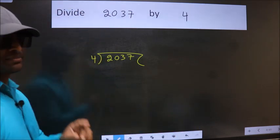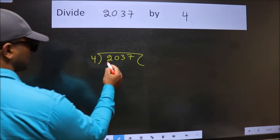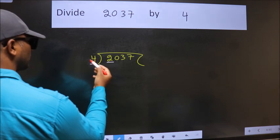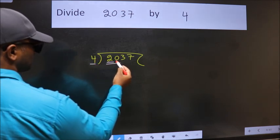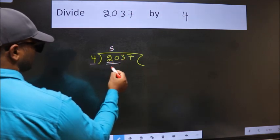This is your step 1. Next, here we have 2 and here 4. 2 is smaller than 4, so we should take two numbers: 20. When do we get 20 in the 4 table? 4 times 5 is 20.